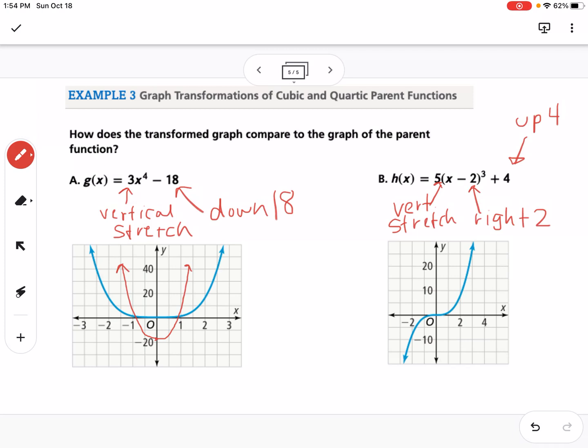So that means I'm going to go right 2, up 4, be kind of in there. And then it's going to be narrower.